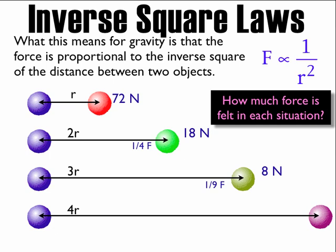Finally, four times the distance: inverse of 4 is one-fourth, squared is one-sixteenth. So 72 N times one-sixteenth equals 4.5 N.